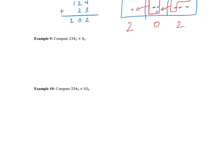Let's try some multiplication. In this example I have 2, 3, 4 multiplied by 4. 4 times 4 is 16, which we represent as 3, 1 (three 5s plus 1 more). Next, 3 times 4 is 12, plus 3 carried gives 15, which is 3, 0. Then 2 times 4 is 8, plus 3 carried is 11, which is 2, 1. So there's our answer.